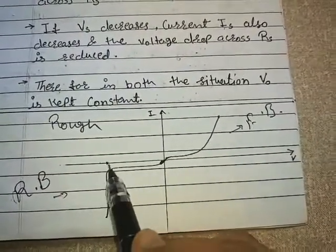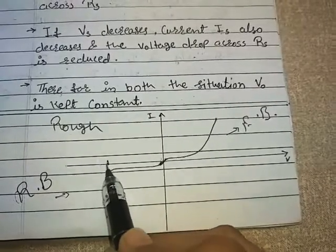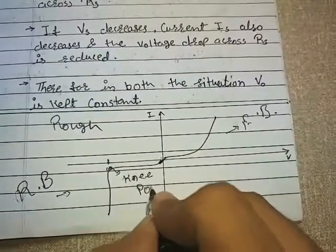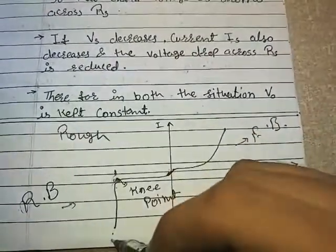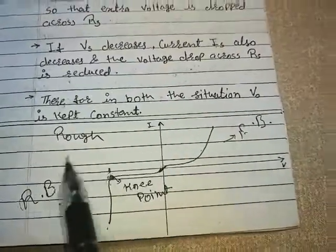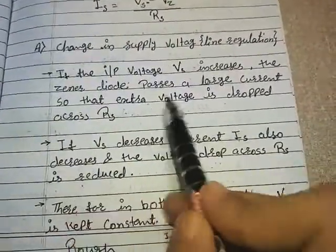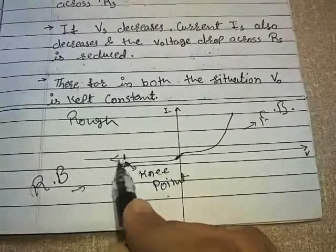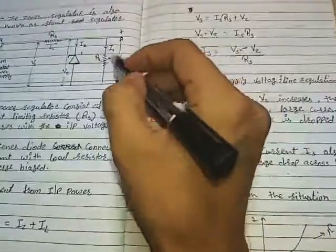During reverse bias, up to a certain voltage level it passes a near-constant current, but once the level crosses the knee point, the current increases sharply. So when VS increases, the zener diode passes a large current so that extra voltage is dropped across RS. Maximum current flows through the zener diode, and at the output the voltage remains constant.